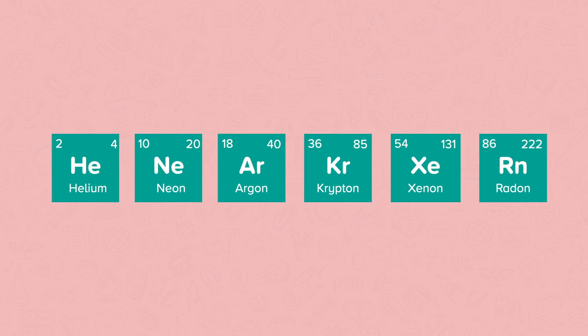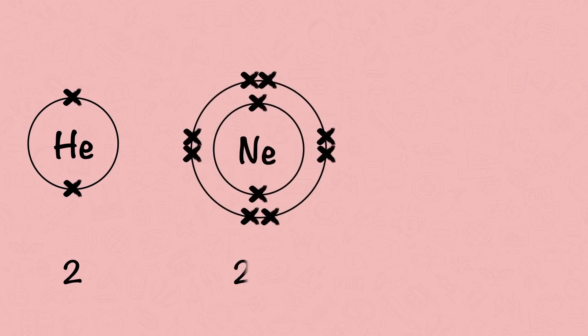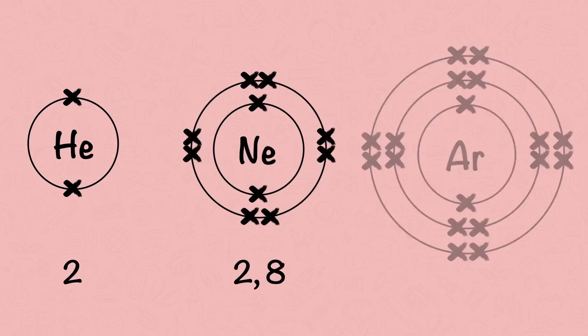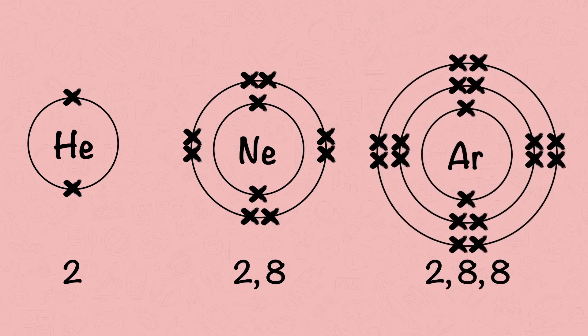Group 0 elements are non-metals. Helium has two electrons in its outer shell. This is considered full because it is the first shell and it can hold up to a maximum of two. Neon and argon both have eight electrons in their outer shell. Neon has its outer electrons in the second shell and argon has its outer electrons in the third shell.